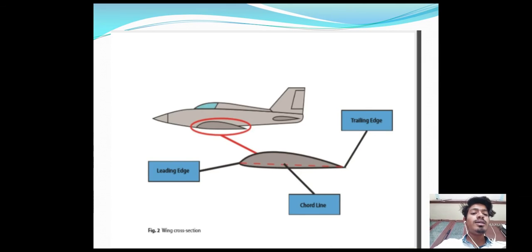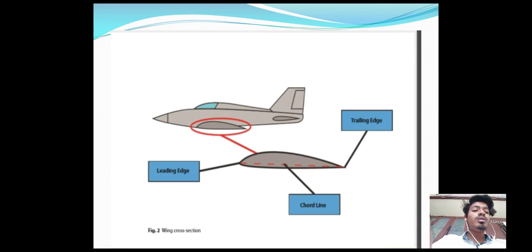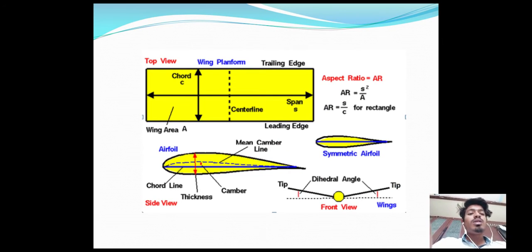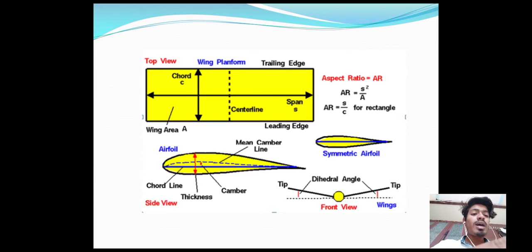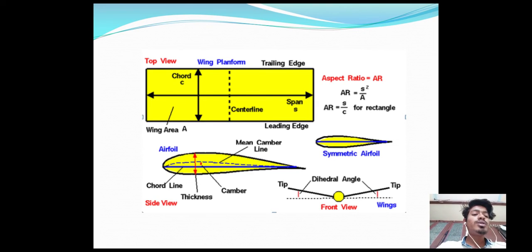Here we can see the leading edge, the trailing edge, and the chord line. From one wing tip to the other wing tip, it is called the wingspan. In the example of a symmetrical airfoil, we can see the chord line, the thickness, and the camber line. This is the side view of the airfoil, and the outermost end part of the wing is called the tip.